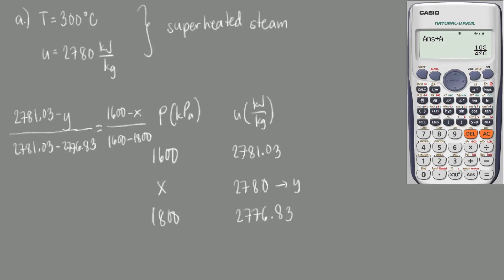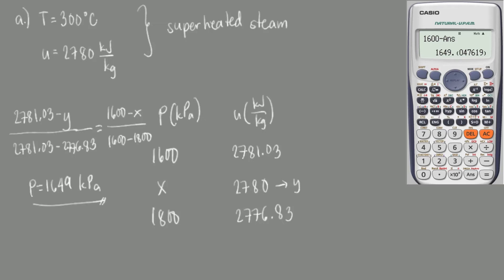Whenever we have two interpolates for different properties under the same given, we multiply this ratio by the denominator on the right-hand side: (1,600 minus 1,800). This value is then subtracted from 1,600, giving an interpolated pressure of 1,649 kilopascals. Keep in mind that your final value should be between the upper and lower values. Our value of 2,780 is closer to the upper value of 2,781.03 than to 2,776.83, so our pressure of 1,649 should be closer to 1,600 — and it is. We are confident our interpolation is correct.